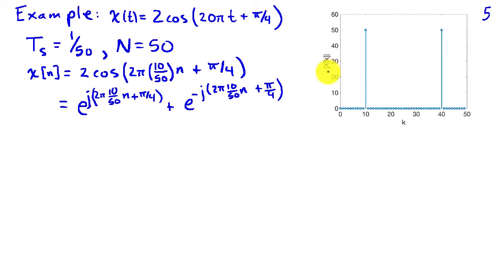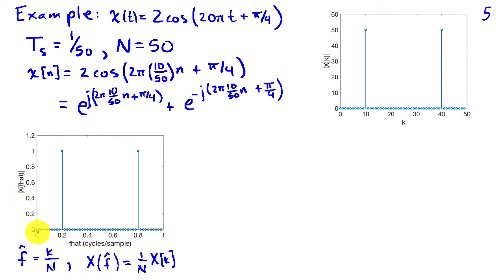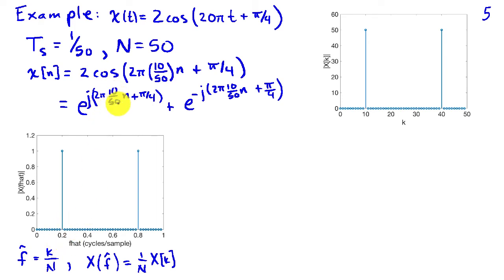Here is the magnitude of the DFT coefficients. There is a coefficient of amplitude 50 at k equals 10 and another at k equals 40. The coefficient at k equals 10 corresponds to frequency 10 over 50. After scaling the amplitude by dividing by N equals 50, we get a spectrum value of 1. The discrete time frequency f-hat equals k divided by N, so the large component at k equals 10 corresponds to a discrete time frequency of 0.2, which is identical to 10 over 50.